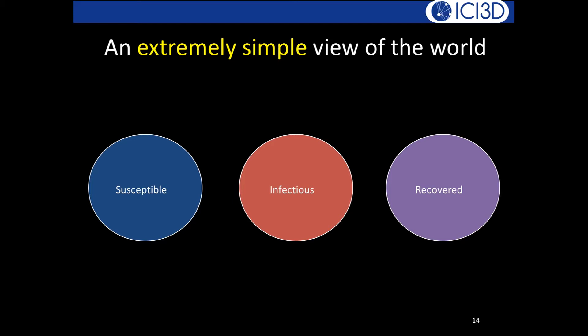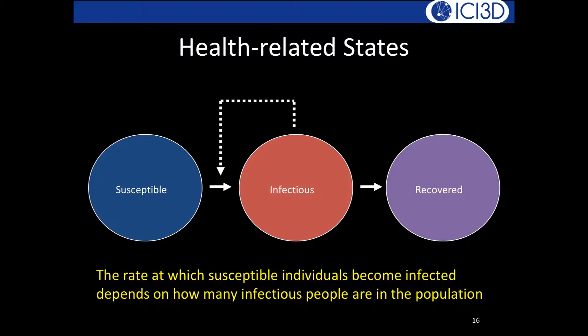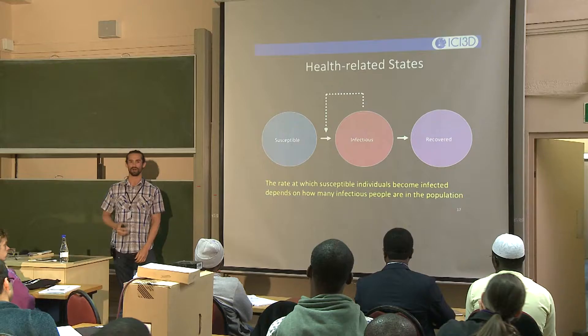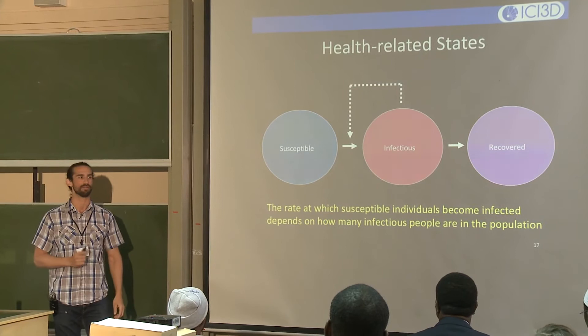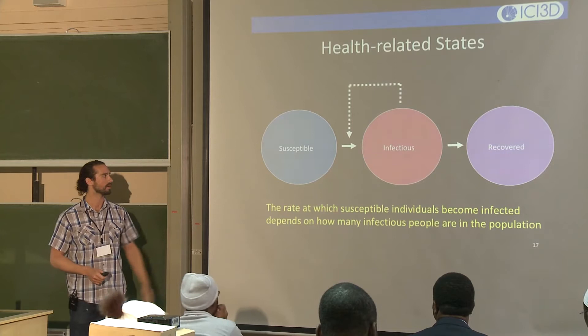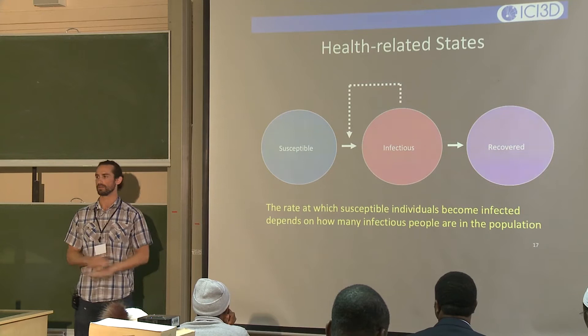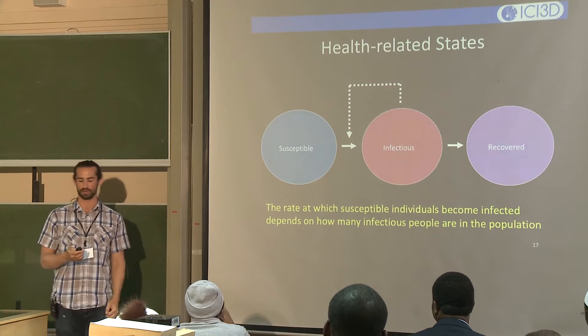People flow to the right: susceptibles can become infected and infectious, and when infectious they can recover, gaining lifelong immunity. The key insight — represented by a dashed arrow — is that the rate at which susceptibles become infected depends on the number of people currently infected. This feedback loop is why mathematics is so useful in studying diseases.